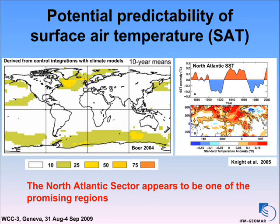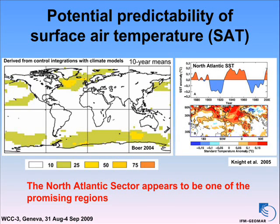This is just a diagnostic study. On the left, you see the decadal predictability potential derived from controlled integrations with global climate models. This figure looks completely different from one showing the interannual predictability potential — most of the interannual predictability potential is in the tropics, El Niño.